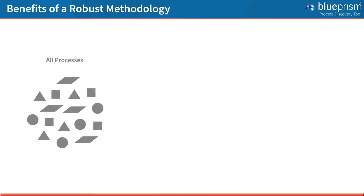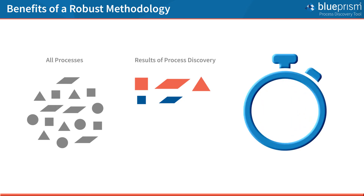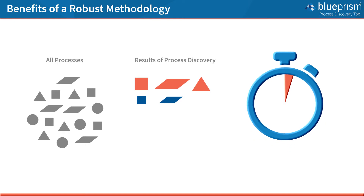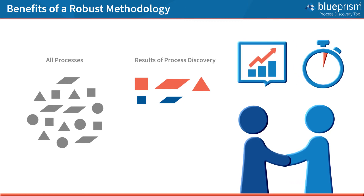A robust methodology will ensure you can discover the best candidates for automation in the most resource-efficient manner, spending 95% of your time on the processes that can be automated, maximising the value of each engagement with your subject matter experts, and demonstrating realised benefit to your sponsors.